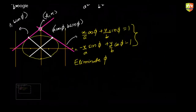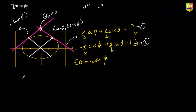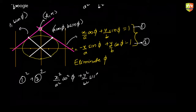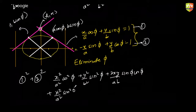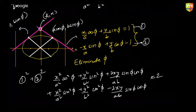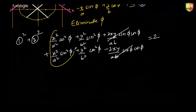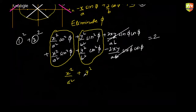To eliminate φ, call equation one and equation two, then compute one² + two². This gives x²/a²·cos²φ + y²/b²·sin²φ + 2xy/(ab)·sinφ·cosφ + x²/a²·sin²φ + y²/b²·cos²φ − 2xy/(ab)·sinφ·cosφ = 1 + 1 = 2. The cross terms cancel, and we can club the remaining terms together to get the required locus of their point of intersection.